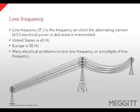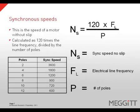Line frequency is the frequency at which alternating current, or AC current, electrical power is delivered or transmitted. In the United States, this is at 60 hertz. In Europe, this is at 50 hertz. Many electrical problems involve line frequency or a multiple of line frequency. Synchronous speed is the speed of a motor without slip. Slip is the difference between the synchronous speed and the actual speed of a motor. We can calculate synchronous speed by multiplying 120 times the line frequency divided by the number of poles. In the United States, a synchronous speed can be calculated by multiplying 120 times 60 hertz divided by the number of poles.